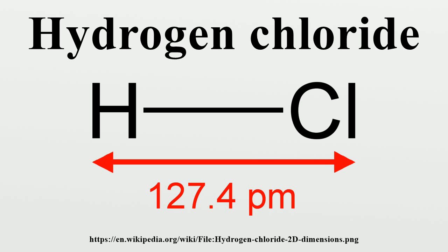Small amounts of hydrogen chloride gas for laboratory use can be generated in a hydrogen chloride generator by dehydrating hydrochloric acid with either sulfuric acid or anhydrous calcium chloride. Alternatively, hydrogen chloride can be generated by the reaction of sulfuric acid with sodium chloride: NaCl + H2SO4 → NaHSO4 + HCl. This reaction occurs at room temperature, provided there is NaCl remaining in the generator.